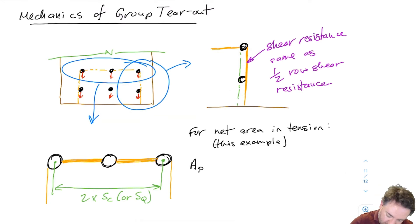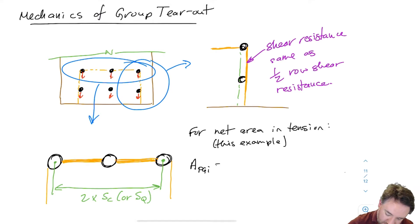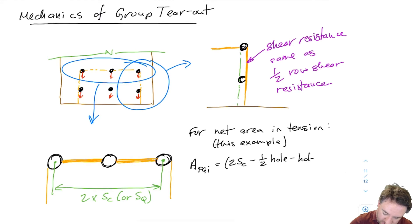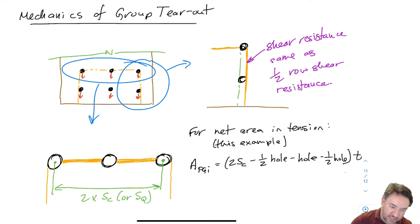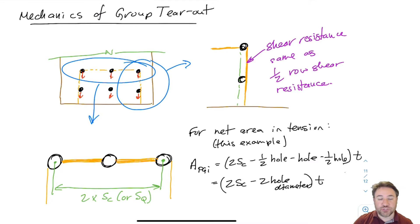To find the length of just the net tension lines, I have to remove the bolt holes, because this is net tension, not gross. The net area A_pgi (for group tear out member i) is: two times s_c, minus half a hole on the left, minus the full hole in the middle, minus another half hole on the right, all multiplied by thickness t. This gives A_pgi = (2·s_c − 2·d_hole) · t. We must remember the hole diameter is larger than the bolt diameter — we usually assume it's bigger by 2 mm.